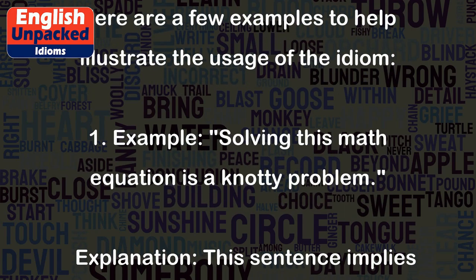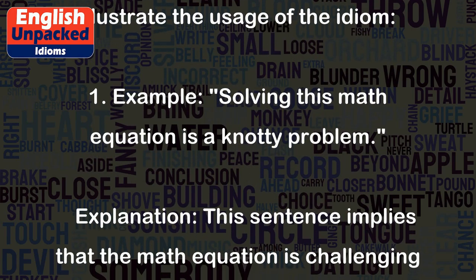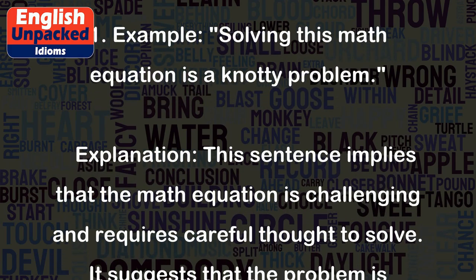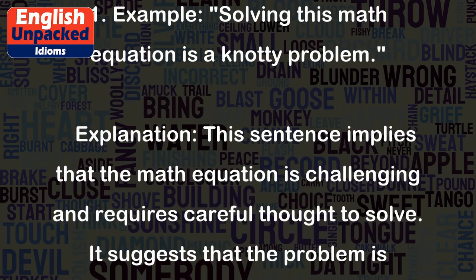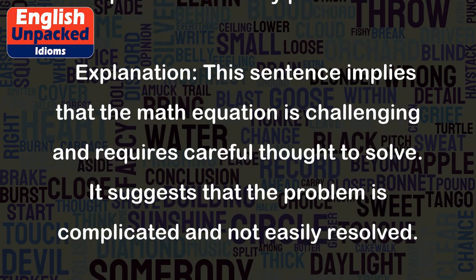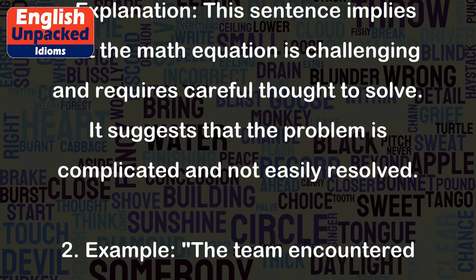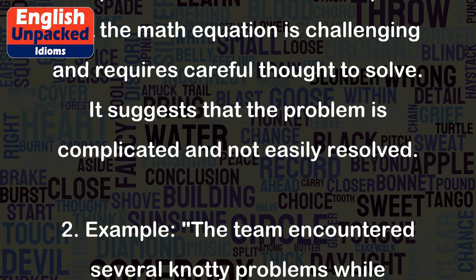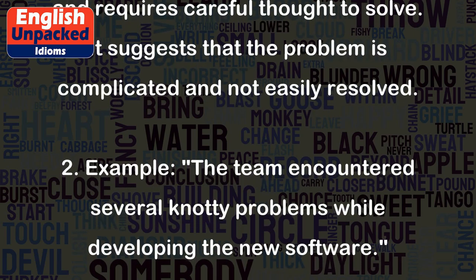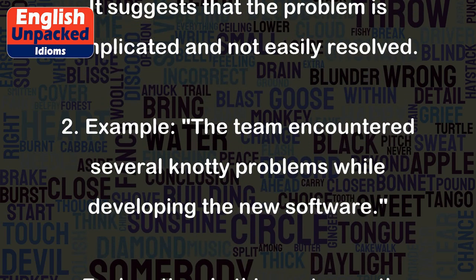Example 1: Solving this math equation is a knotty problem. This sentence implies that the math equation is challenging and requires careful thought to solve. It suggests that the problem is complicated and not easily resolved.